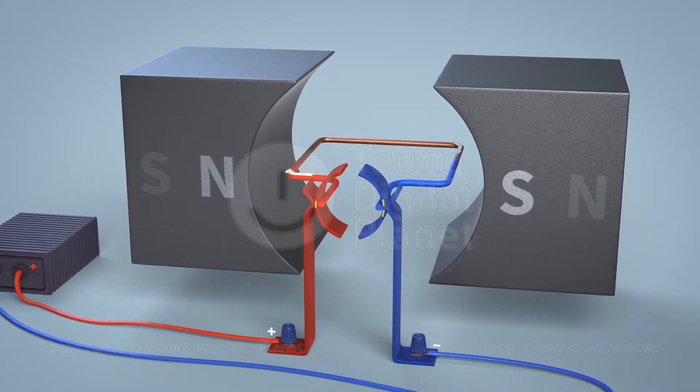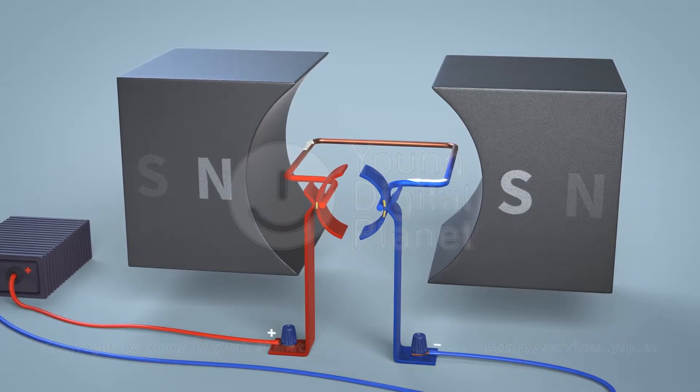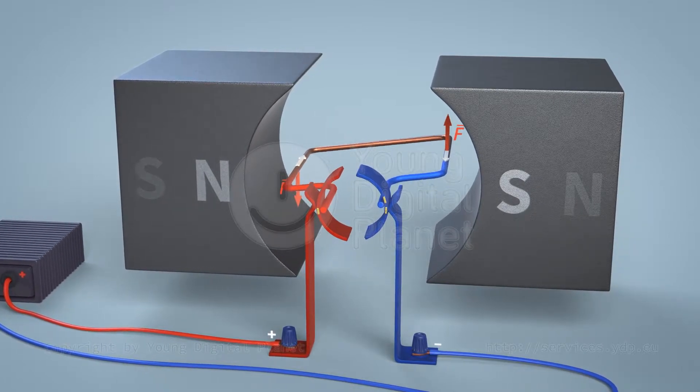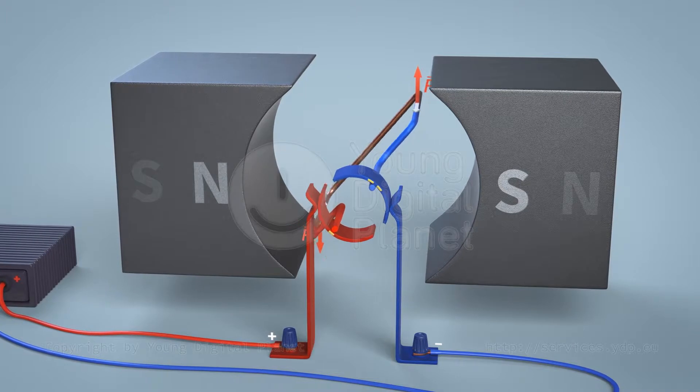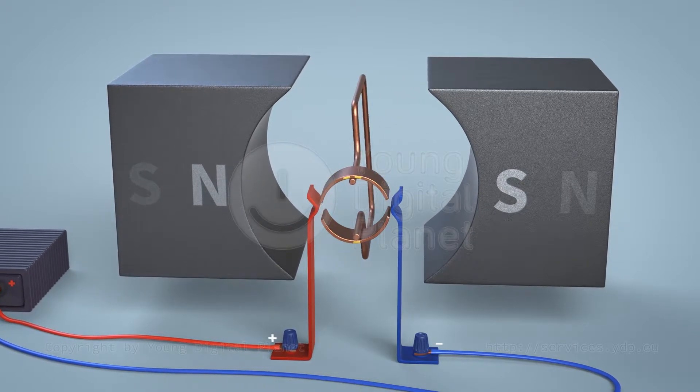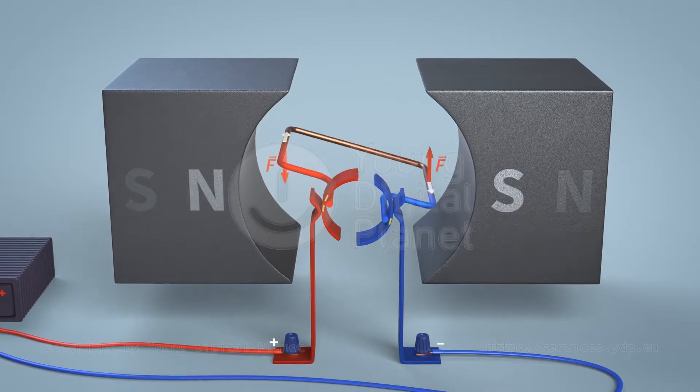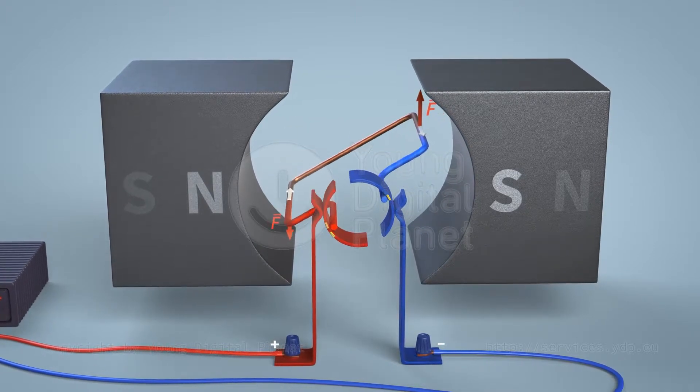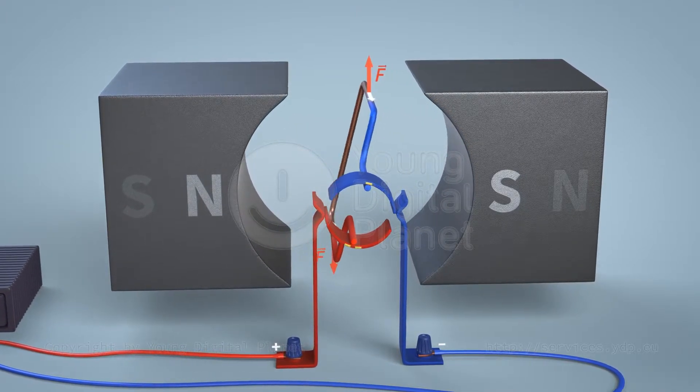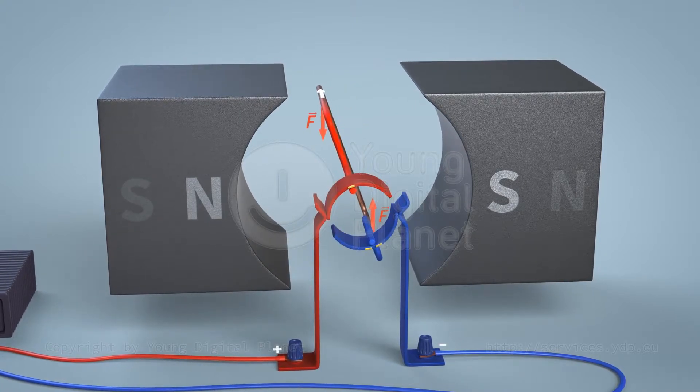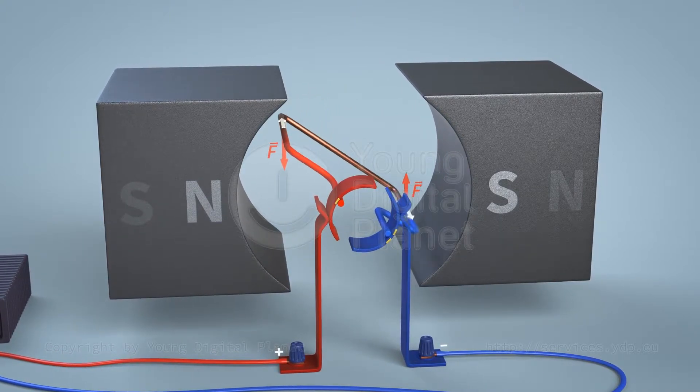The current flows through the frame from the first commutator segment to the second. The frame starts rotating. And when it passes the vertical position, the current begins to flow in the opposite direction, from the second commutator segment to the first. Because of the direction of the forces, the frame continues to rotate.